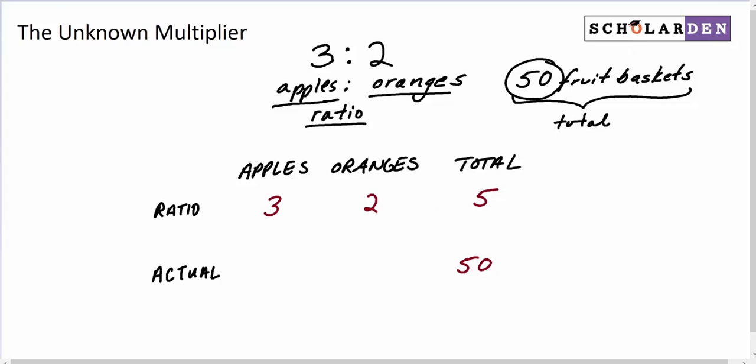Now here's where the unknown multiplier comes in. The unknown multiplier multiplies every ratio to get the actual, and it has to be the same. In other words, we could think of it as being scaled up. What did I have to multiply the 5 by to get 50? What did I have to multiply the ratio by to get the actual? Well, the answer is 10. 10 is the unknown multiplier, but we just found it out. Now that has to be the multiplier for all of these.